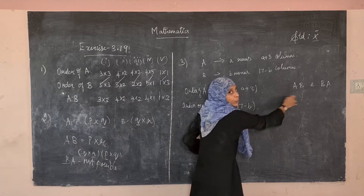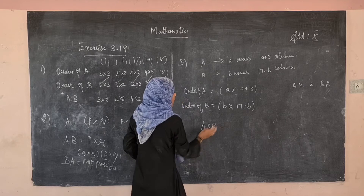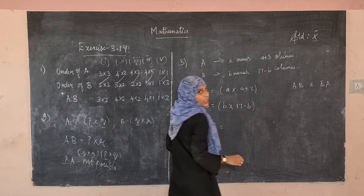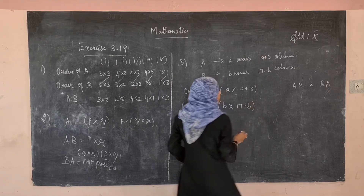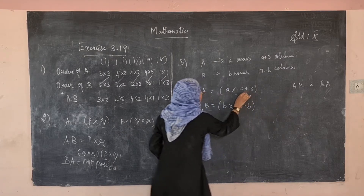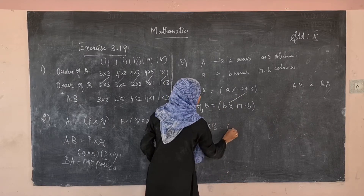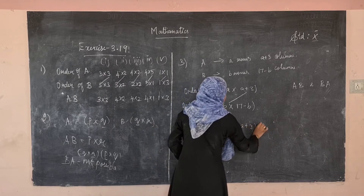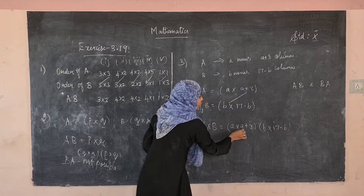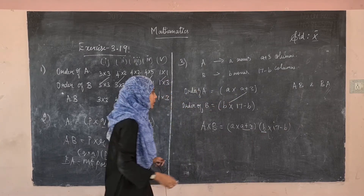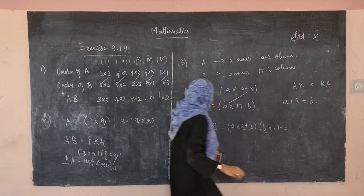Since AB is possible, the inner dimensions must match: the number of columns of A equals the number of rows of B. So a+3 = b. And since BA is possible, the number of columns of B equals the number of rows of A: 17−b = a.